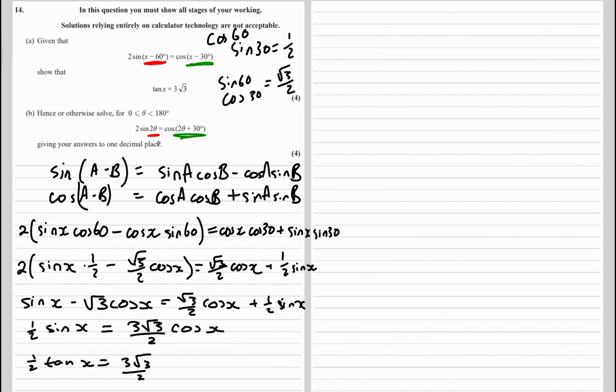So what's happened? So x minus 60 equals 2 theta. So if we changed these x's to 2 theta plus 60, we'll get 2 theta and 2 theta plus 30.